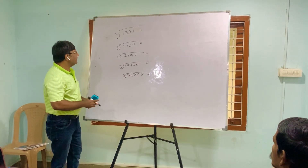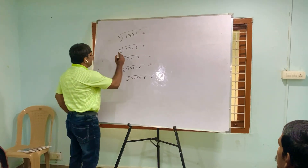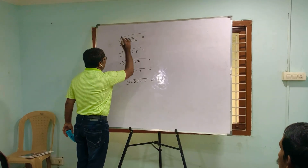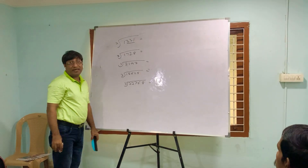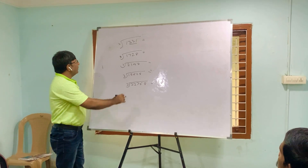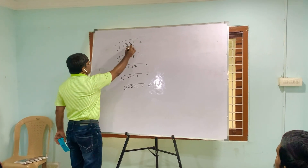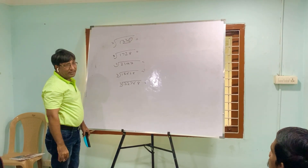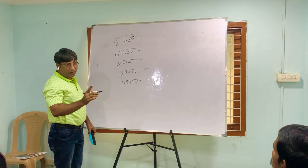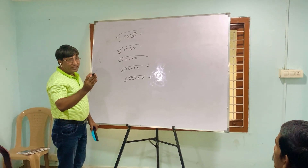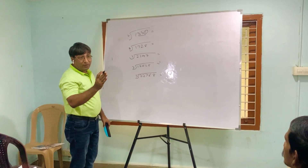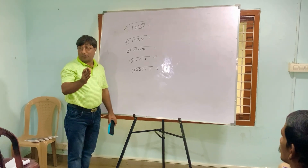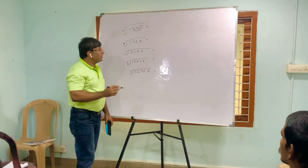The technique is: from the number, make a group of three digits. Look at the unit digit — here the unit is 1. Find what the cube root of 1 is: 1 × 1 × 1 = 1, so write 1 here.